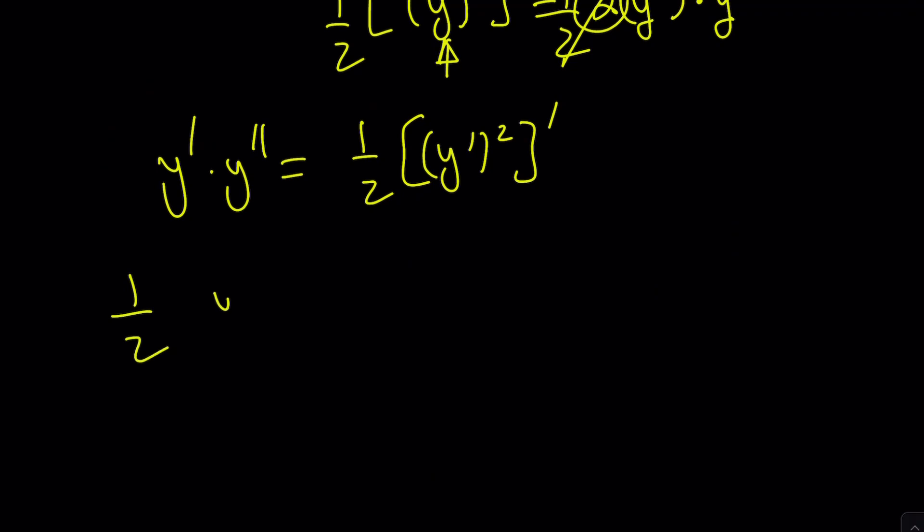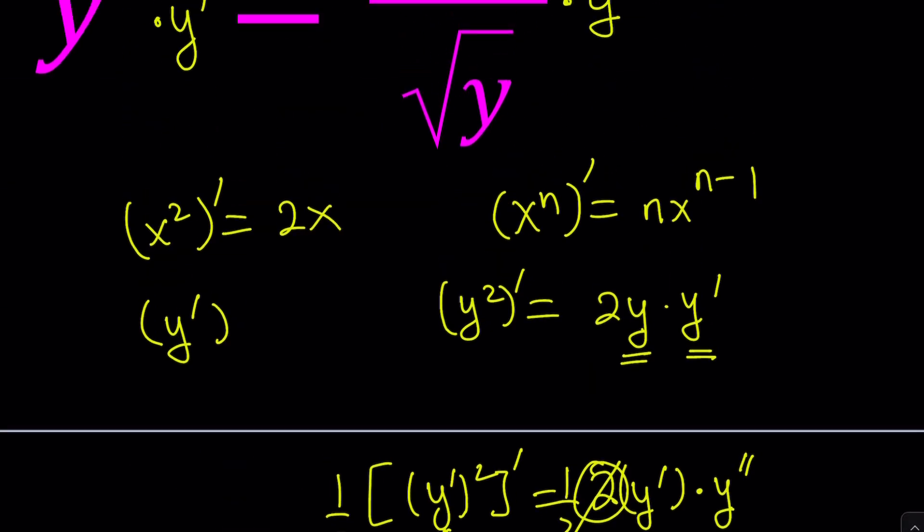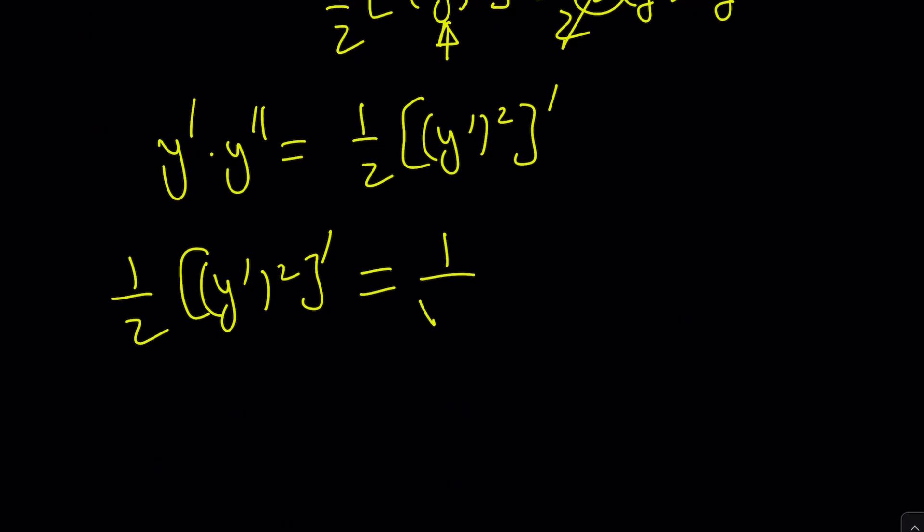But, we have an extra two, but don't worry about it. We're going to divide both sides by two or multiply by one half, and that'll work. So, in other words, y prime times y double prime is the same thing as half of y prime squared differentiated. That looks kind of complicated, but don't worry too much about it. We'll take care of it. So, the left-hand side is going to be the derivative of y prime squared divided by two.